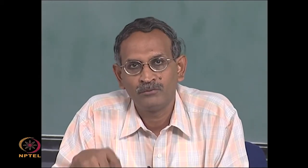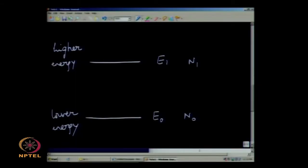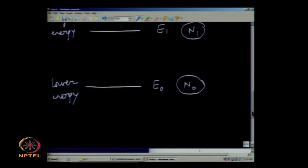The Maxwell-Boltzmann distribution law for kinetic energies and average velocities of molecules is applicable here for a system in thermal equilibrium. If we assume there are already a certain number of molecules in the excited state and a much larger number in the ground state, that is the scenario in the absence of radiation. In the presence of radiation, let light shine on the molecules; let the electromagnetic radiation interact with matter for a brief amount of time. Supposing the molecule is in the ground state and the energy of the radiation hν corresponds exactly to the gap between the two energies — if E₁ − E₀ = hν — where ν is the frequency of radiation falling on the molecule.